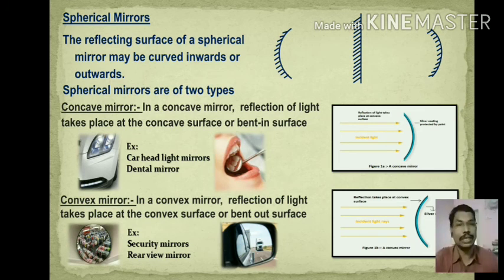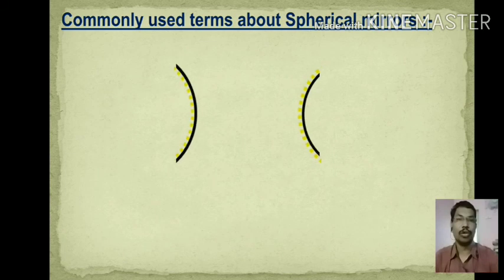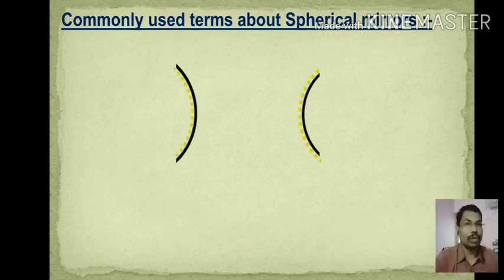Examples of convex mirrors include security mirrors, side mirrors, and rear-view mirrors of cars or bikes. If you check them, they are not flat — they are simply bulged out or bent outward.